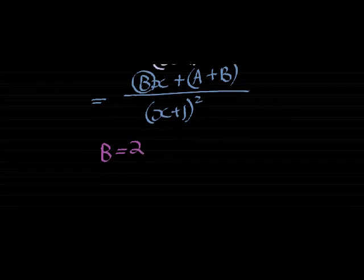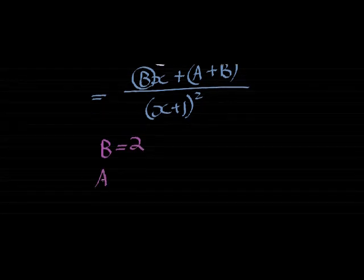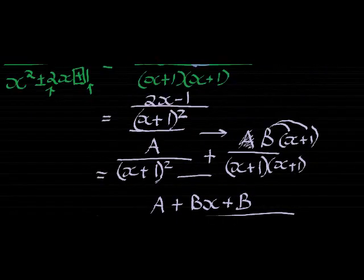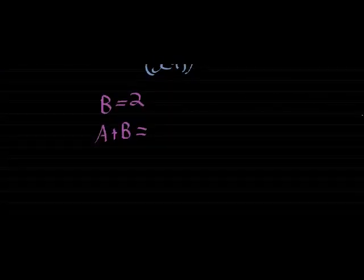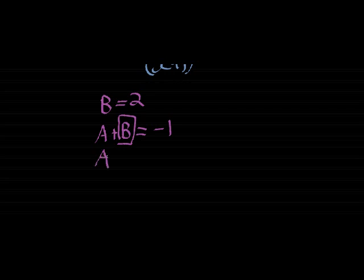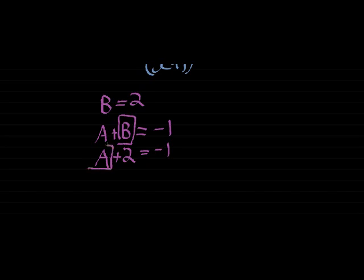Then we see that A plus B, the term without an x, must equal negative 1. But we already know what b is, so let's just substitute what we know about b. b is equal to 2. It must equal negative 1. So what is a? What must I add to 2? There's still a 1, it means I owe 3. Negative 3. a must be equal to negative 3, because negative 3 plus 2 gives me negative 1.